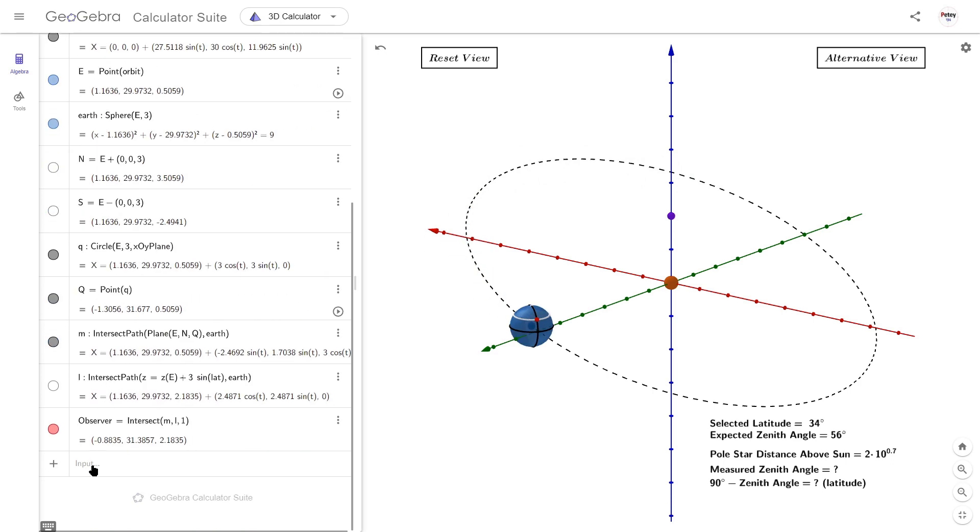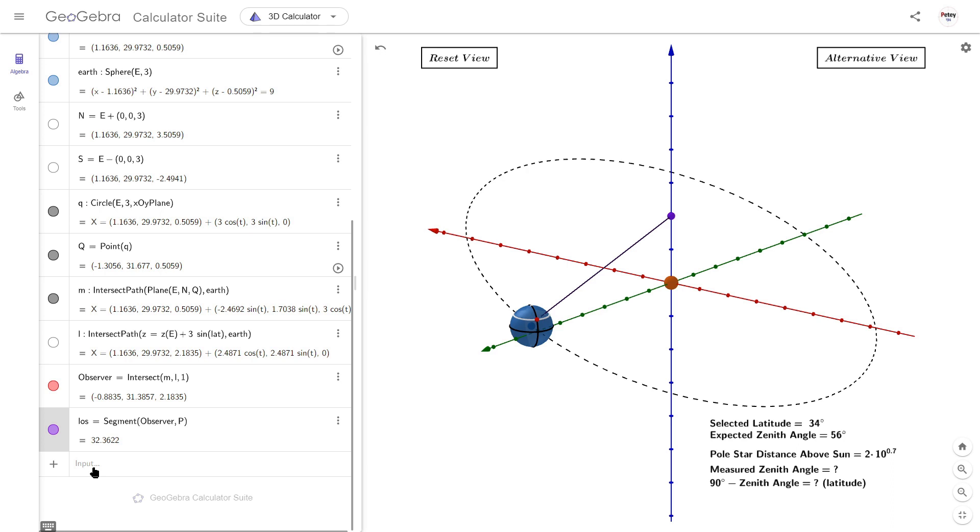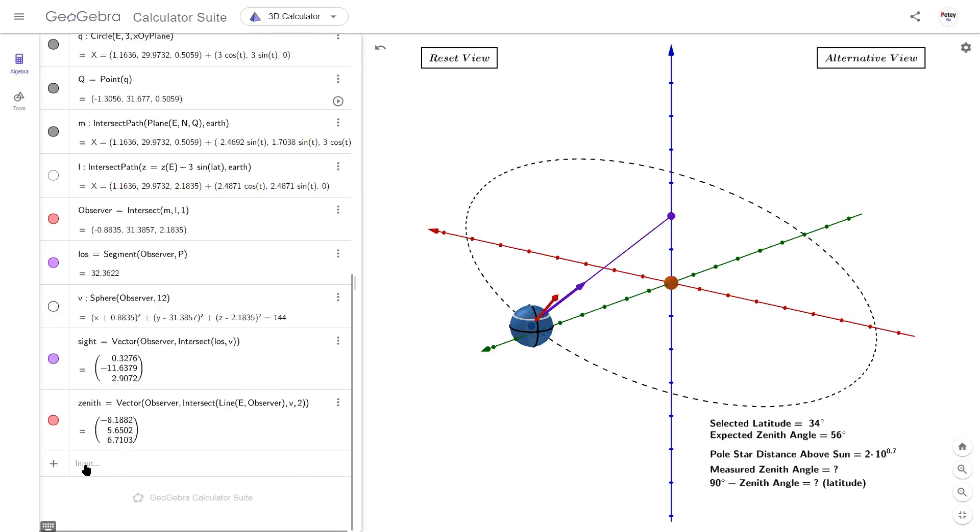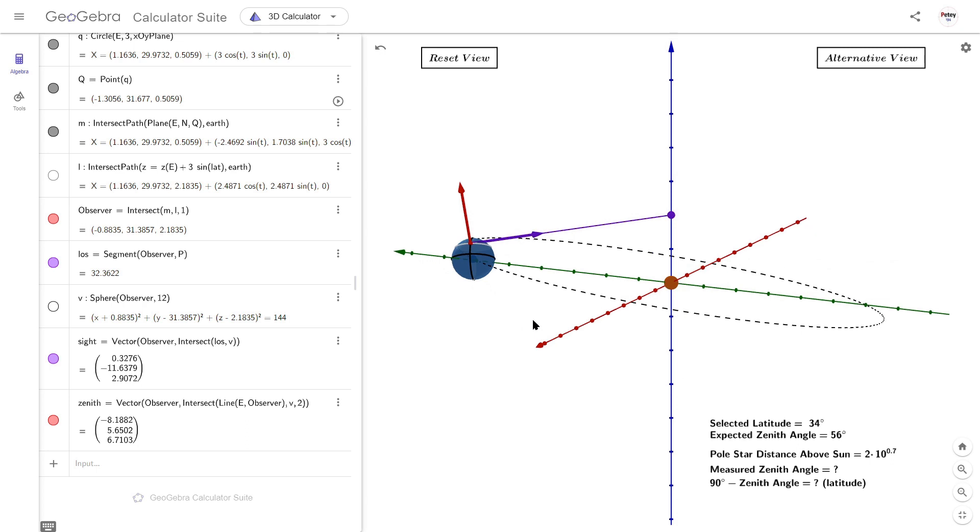So now I want to add a direct line of sight from our observer to Polaris, together with the two vectors we need to measure the angle. The first vector is along the line of sight and the other is along the observer's zenith. And with these in place we're now ready to measure the zenith angle.